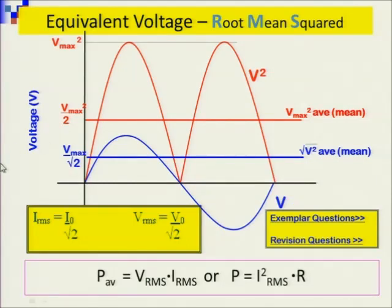Now, what is important for you to remember, is that we never work with maximum. And why don't we work with maximum people? Because it's not always going to be maximum. Remember, these coils are turning. So, at some stage, it's going to be zero, and then it's going to be maximum.